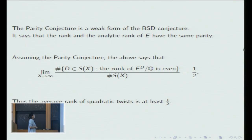The parity conjecture is a weak form of the BSD conjecture. It says that the rank and the analytic rank of E have the same parity. Assuming the parity conjecture, the above well known fact says that half of quadratic twists have even rank and half of quadratic twists have odd rank.